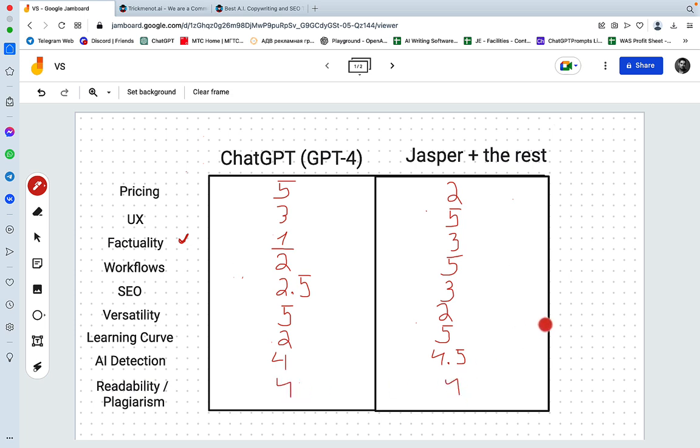So let's now count what we got. For ChatGPT, we got 28 and a half. And for Jasper, 33 and a half. So it looks like a clear winner for Jasper. But again,